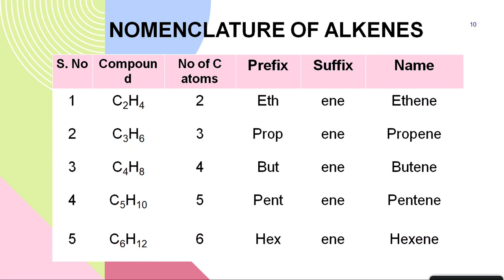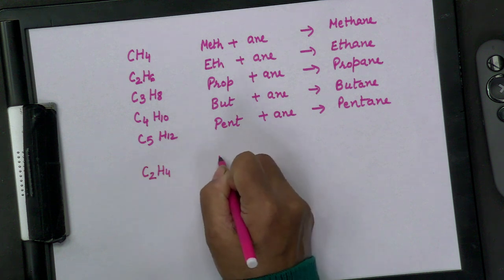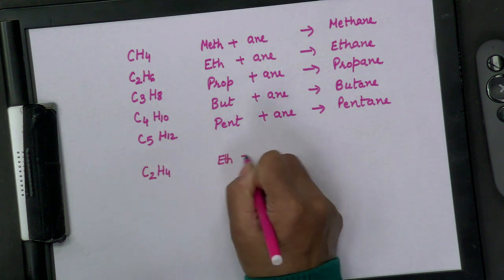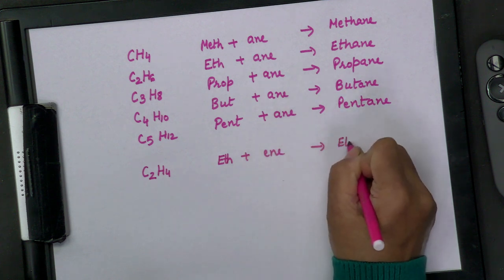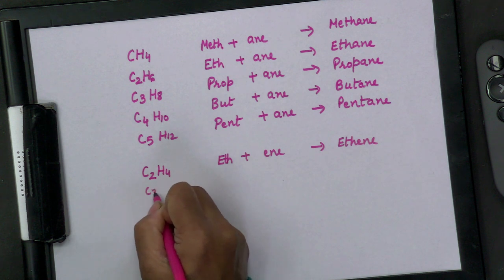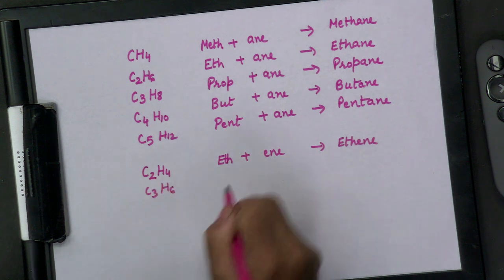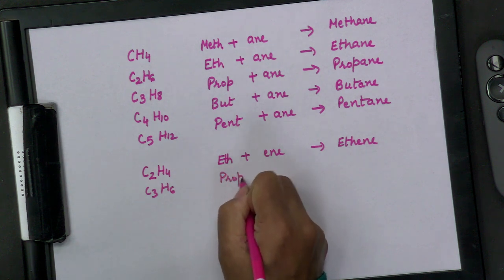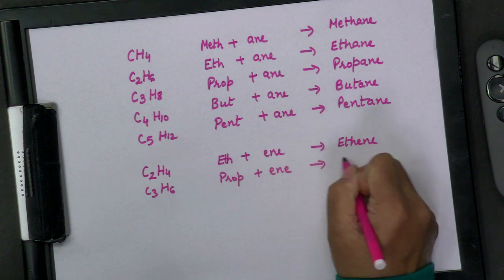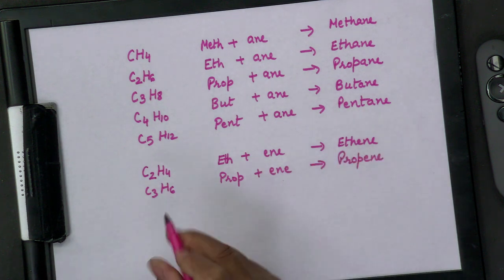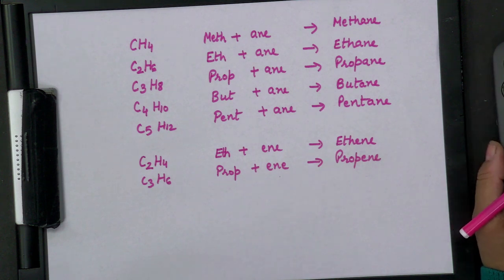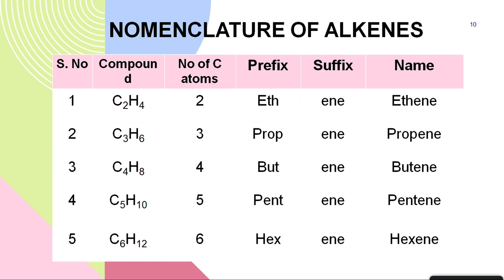Now for alkenes: the first alkene is C₂H₄. Its name is eth + ene = ethene. C₃H₆: prop + ene = propene. C₄H₈: but + ene = butene. C₅H₁₀: pent + ene = pentene. C₆H₁₂: hex + ene = hexene. Note down these names. If you have learned the prefixes and suffixes, there is no problem writing names.